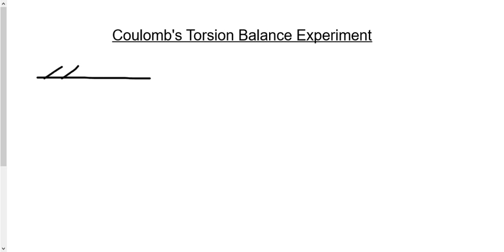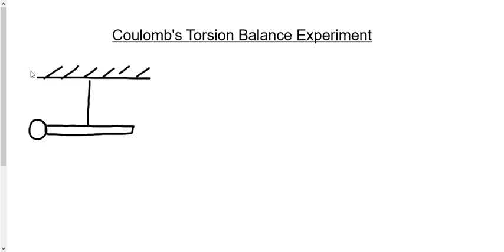We have a string hanging from the top of an apparatus. That string has a little rod hanging from it, and on one end of that rod we have an object we'll call Q1 — charged with however many coulombs. We bring another charge Q2 nearby, causing either a force of attraction or repulsion. There's going to be movement, and as a result, that string will twist — the torsion balance experiment.